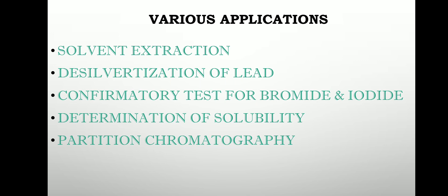Fourth is determination of solubility. When you distribute a solute in two solvents, you can determine exactly how much concentration of solute is present in each solvent — essentially how much solute can be saturated in each solvent. By the ratio of concentration distribution, you can know the solubility of the solute in both solvents.